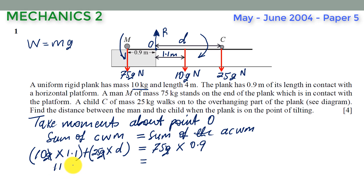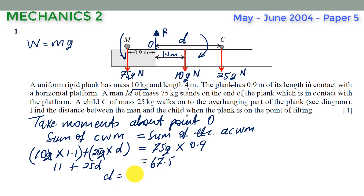The values of g cancel throughout, giving us 11 plus 25d equals 67.5. Subtracting 11 from both sides gives 25d equals 56.5. Dividing by 25, our value of d is equal to 2.26 meters.